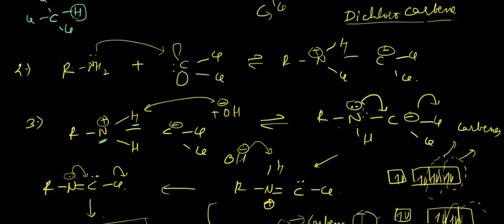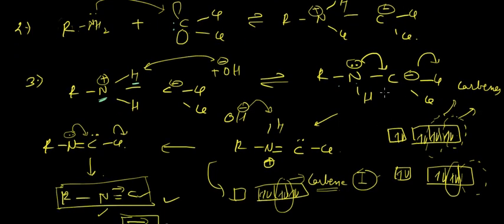With nitrogen's lone pairs intact, it donates them to form a double bond with the carbon atom, and Cl⁻ is removed from the C atom. In the next step we have a positively charged nitrogen atom with one H attached, a double bond to C, a negative charge on carbon, and Cl attached — making carbon more electron-deficient.